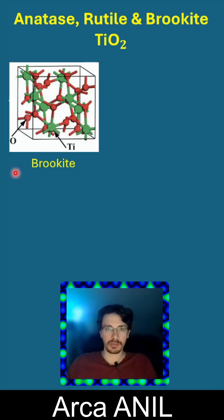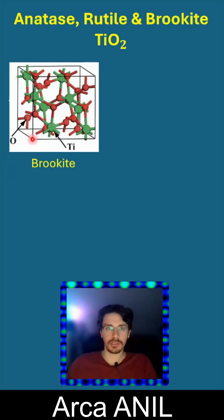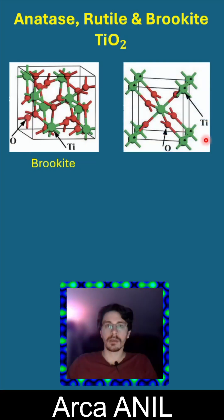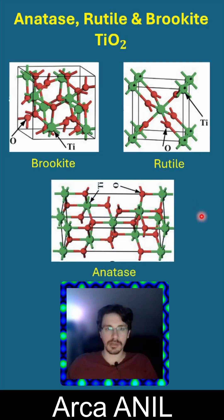The green atoms represent titanium and the red atoms represent oxygen. This is the rutile phase and this is the anatase phase.